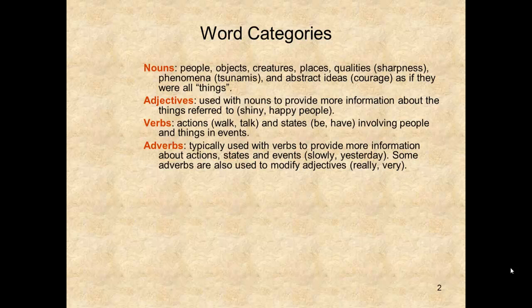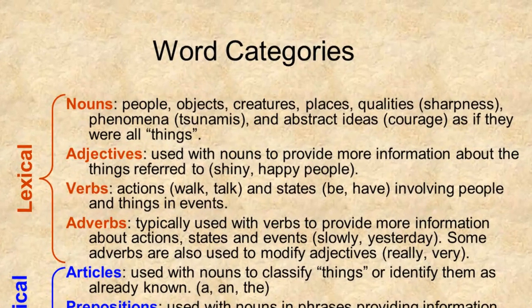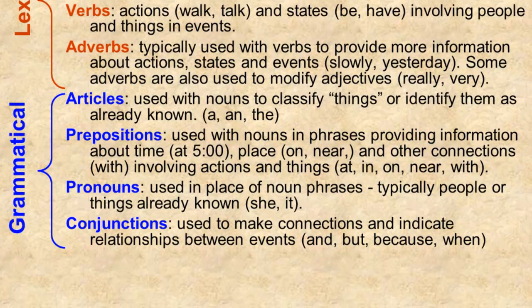As you learned previously, our lexicon can be summarized in eight major categories. Nouns, adjectives, verbs, and adverbs make up the lexical categories, while articles, prepositions, pronouns, and conjunctions comprise the grammatical categories. The lexical words can be thought of as the bricks of the language, providing basic information, while the grammatical words act as the mortar that holds the structure together. The lexical words are those most susceptible to change, addition, subtraction, and meaning evolution.